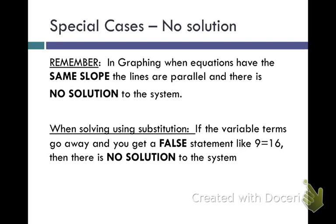Now when you are solving with substitution, you can't see that they're parallel, so you can't see that the lines cross or not. When you are solving using substitution, if the variable terms drop away and you get a false statement, something like 9 equals 16, which is wackadoodle, then you know there is no solution to this system. Those lines must be parallel.